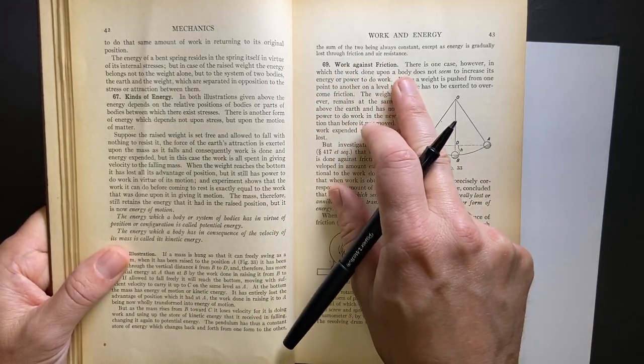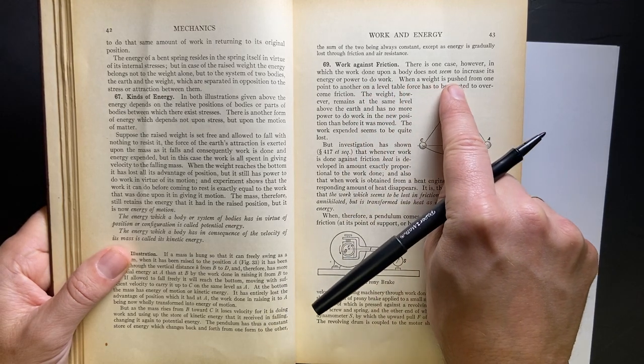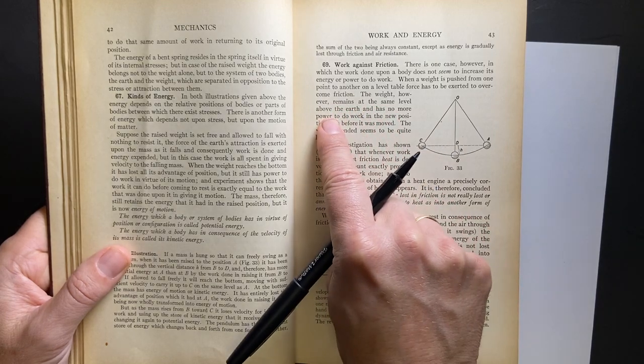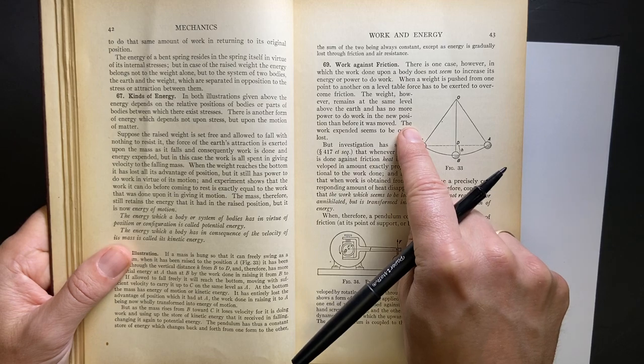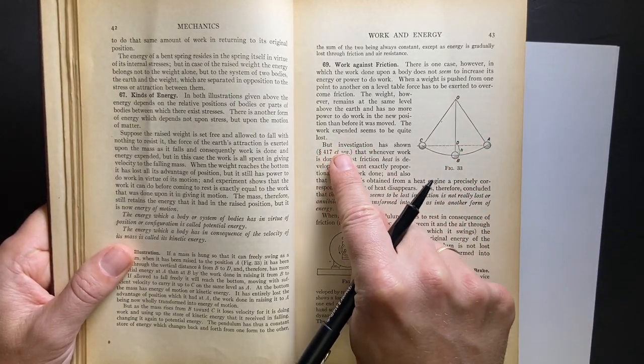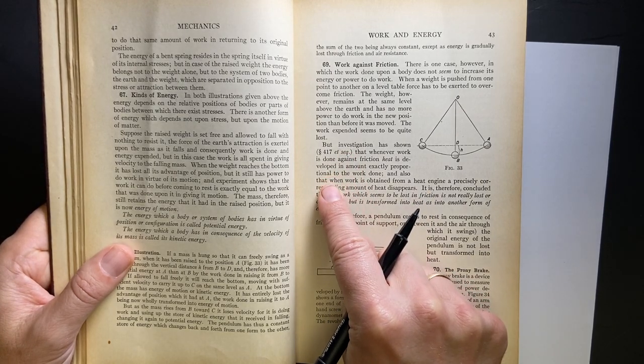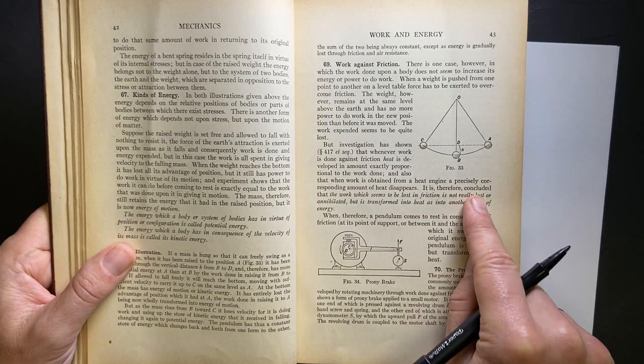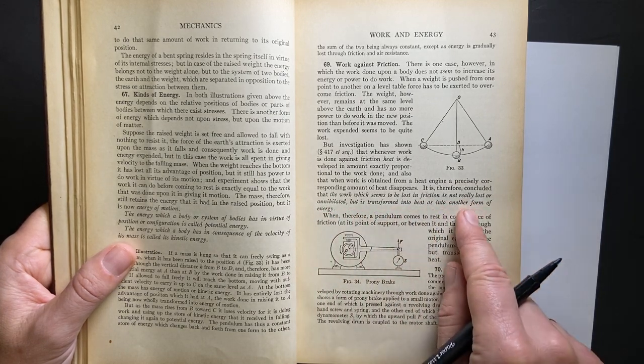So here they have an example. Work against friction. There's one case, however, in which work done upon a body does not seem to increase its energy or do work. When a weight is pushed from one point to another in a level table, force has to be exerted to overcome friction. True. The weight, however, remains at the same level above the Earth and has no more power. That's not right. To do work in the new position that it has before. So they're saying if you push a block on a table and it ends up in a new place, it doesn't really change its ability to do work. It doesn't have any more energy. But investigation has shown that whenever work is done against friction, heat is developed. Okay, so it does heat up. Also, that when work is obtained from a heat engine, a precisely corresponding amount of heat disappears. Therefore, concluded that the work in which seems to be lost in friction is not really lost or annihilated, but is transformed into heat as another form of energy.